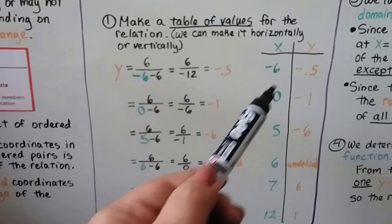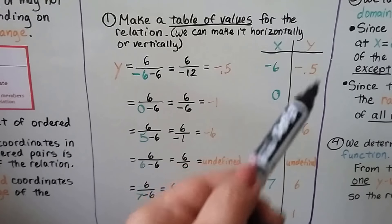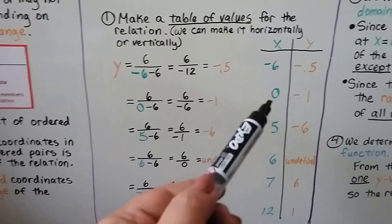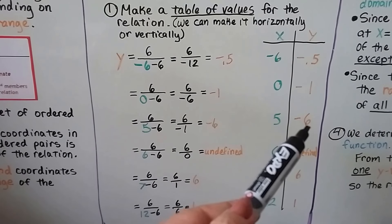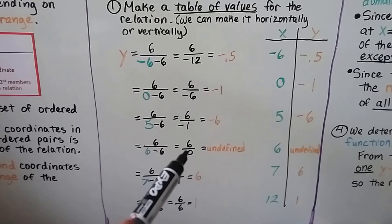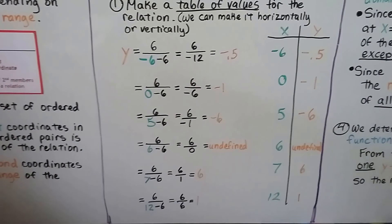When x is negative 6, y is negative 0.5. When x is 0, y is negative 1. When it's 5, y is negative 6. But look what happens when we make x a 6. We get it undefined.